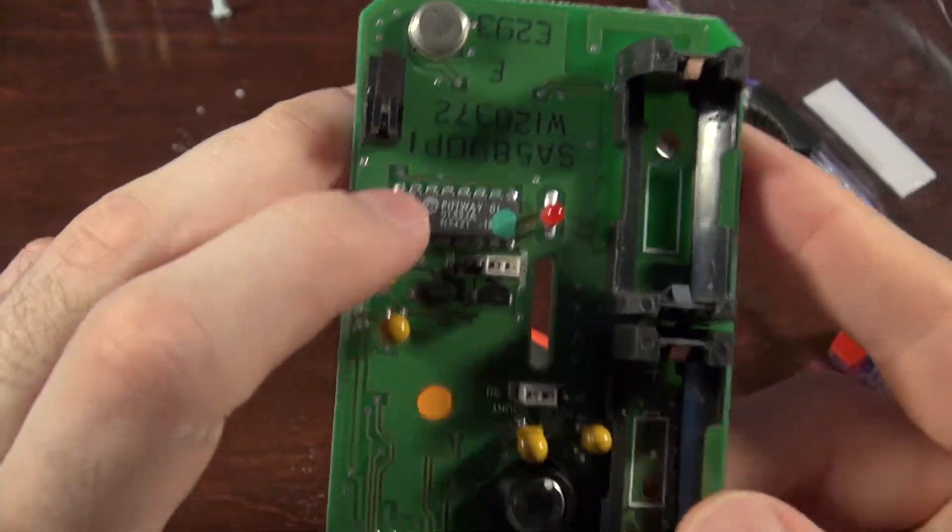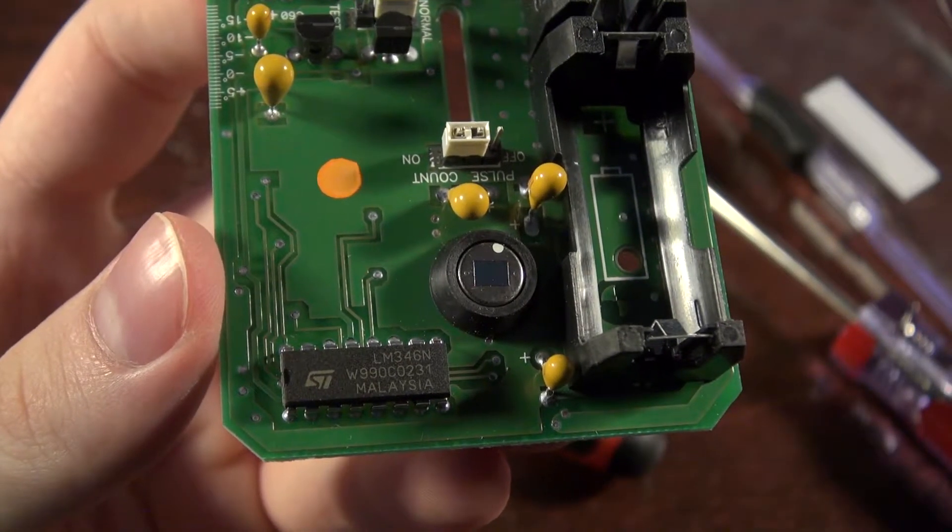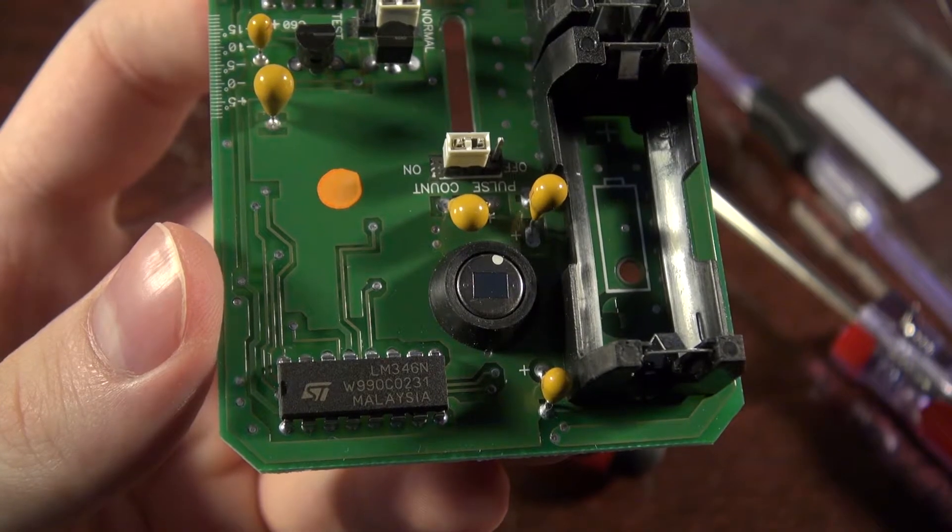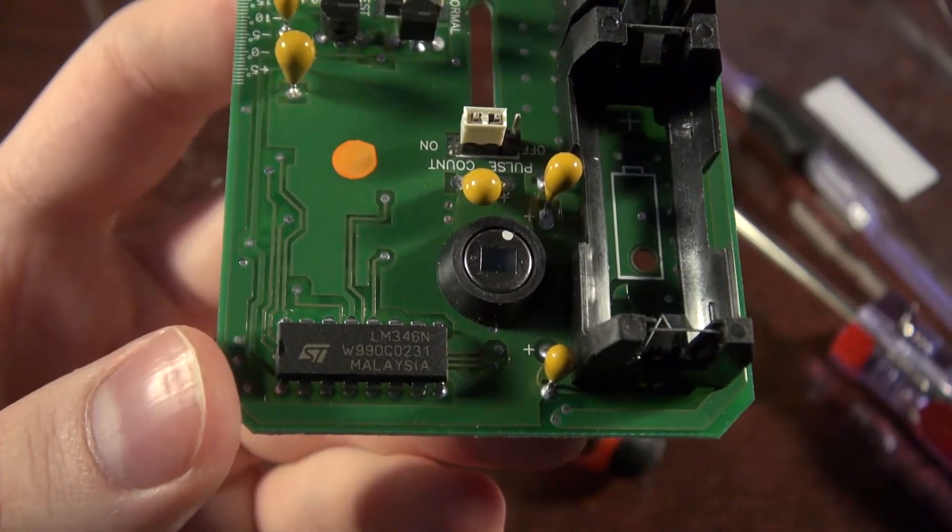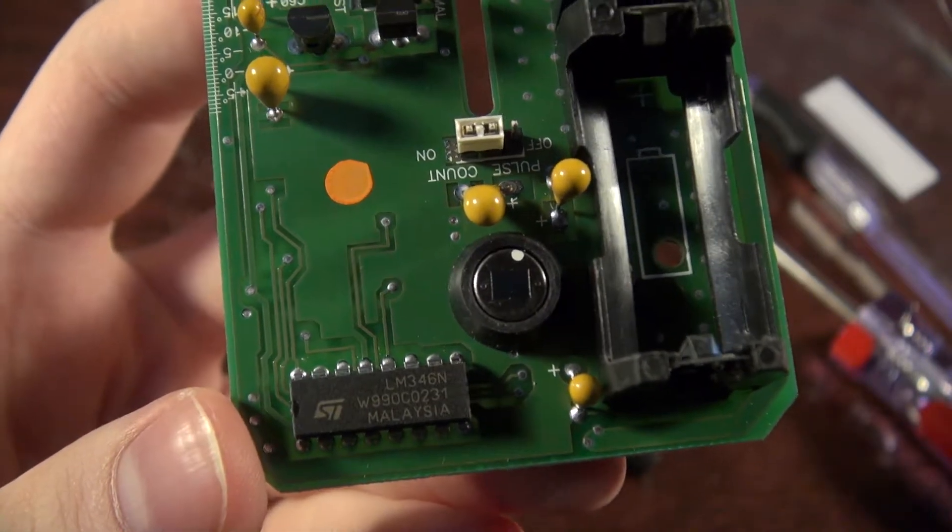So this is probably the wireless transmitter or the brains. But let's find out. I'm awful and can't find anything on that part. So let's go ahead and search this one down here. So it's an STLM346N. Yeah, so that's just a quad bipolar op amp. And there's just nothing really else to it.